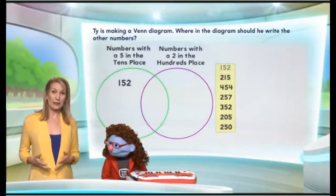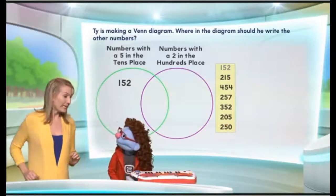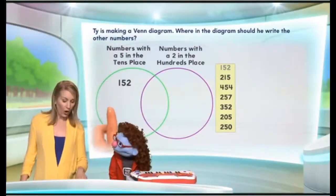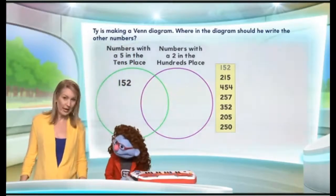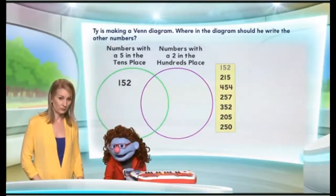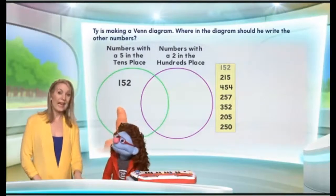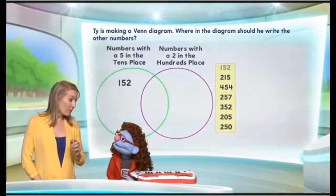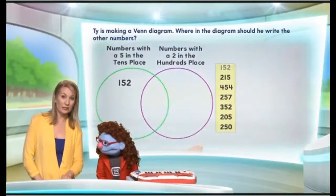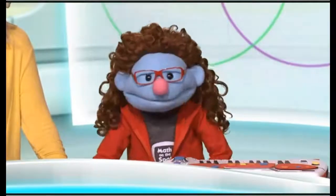Okay, here's the situation. Ty is making a Venn diagram like this, and we need to figure out where these numbers go. In this left green circle, the numbers with a five in the tens place go there. In the purple circle, only the numbers with a two in the hundreds place go in there. And there are some numbers that have both qualities — both a five in the tens place and a two in the hundreds place. Those numbers will go where the two circles overlap. Exactly!